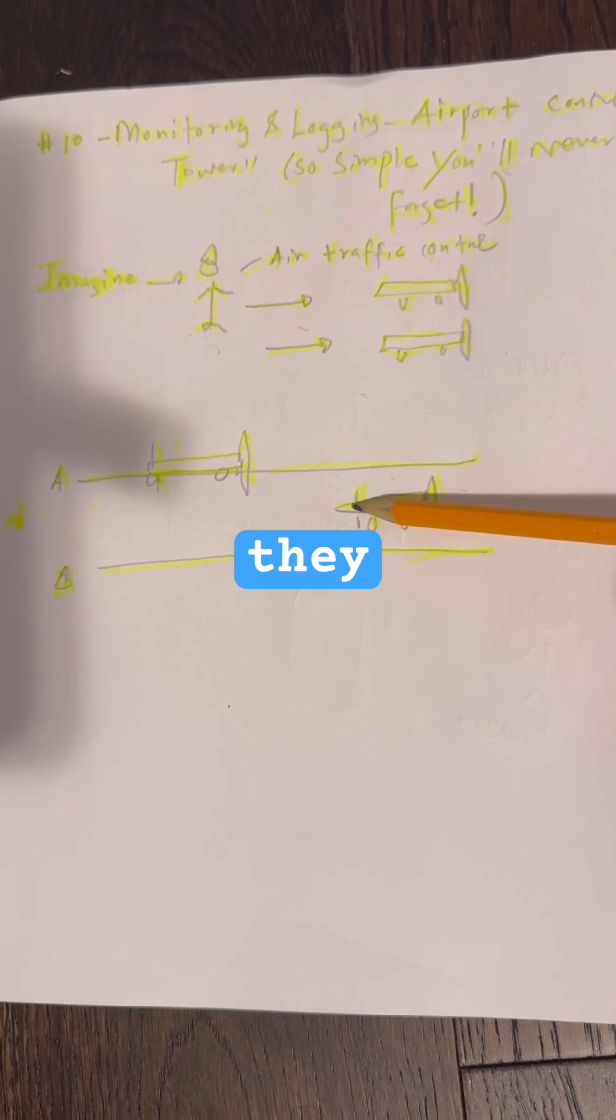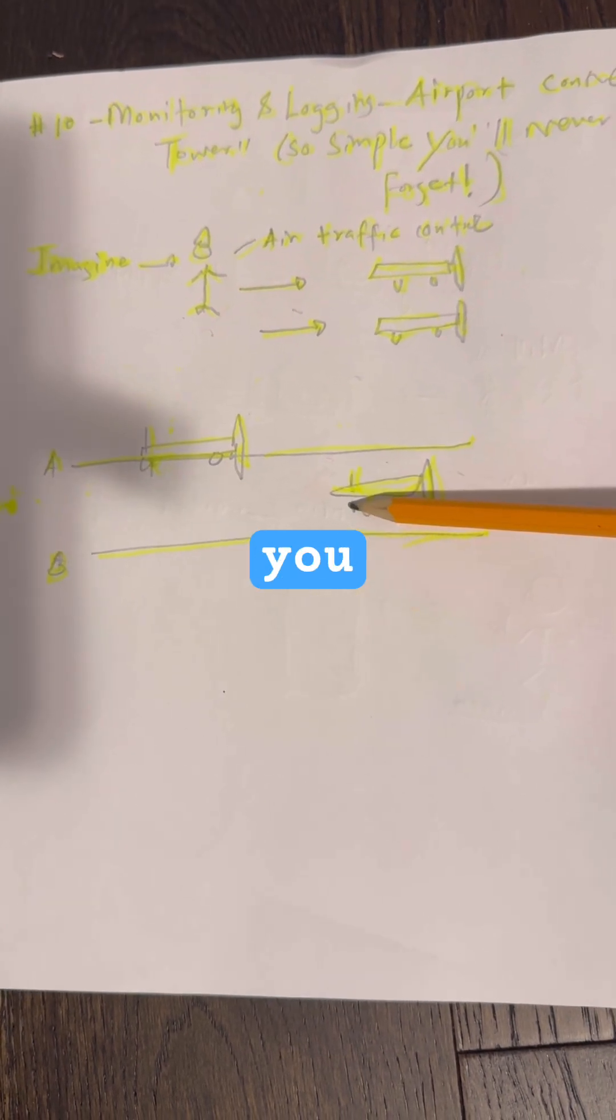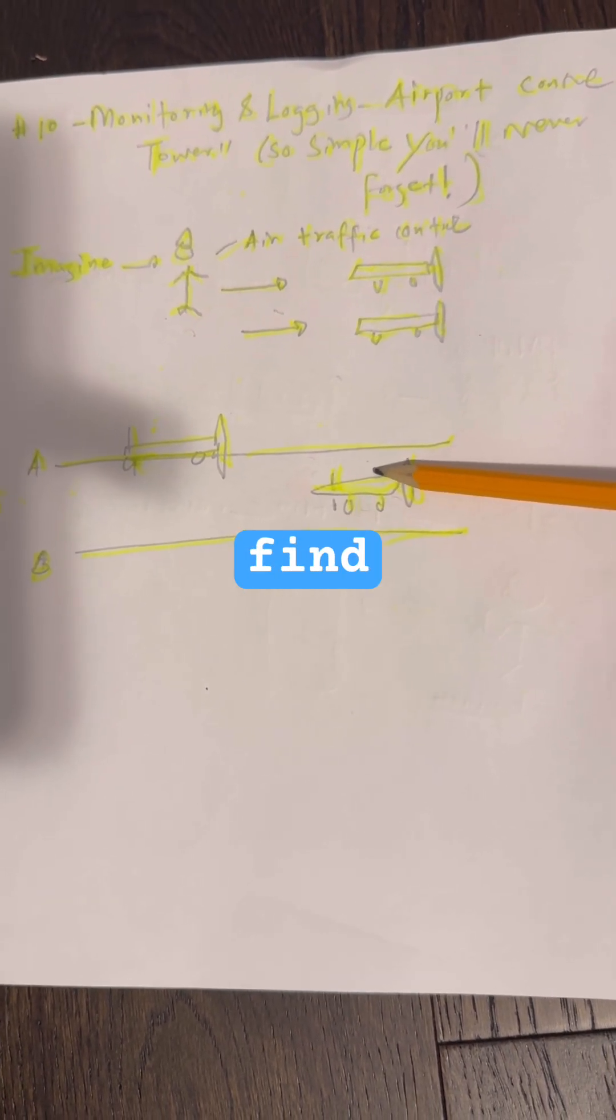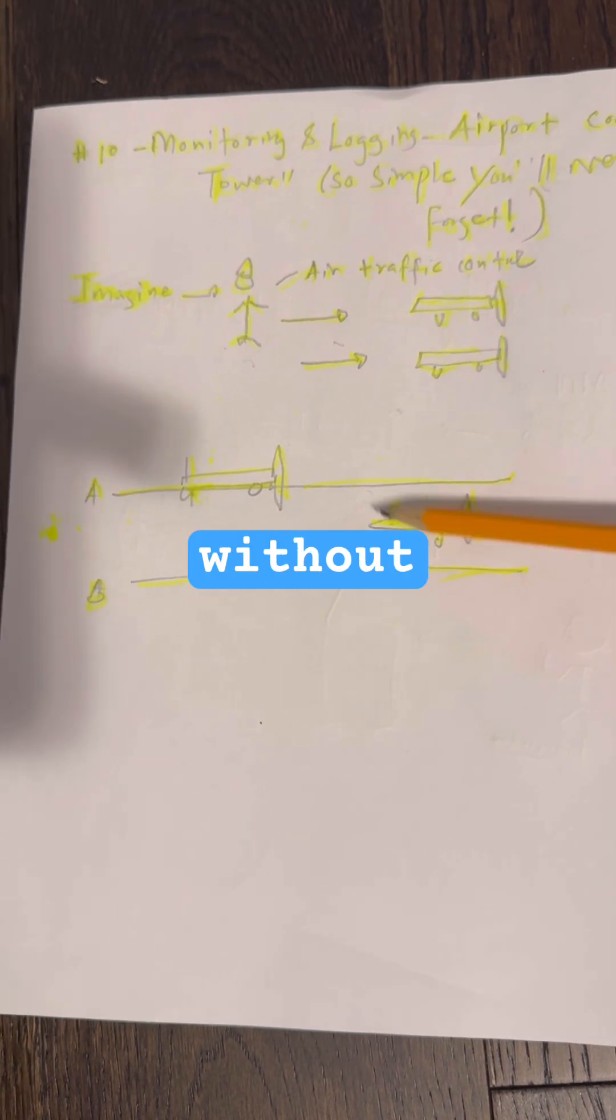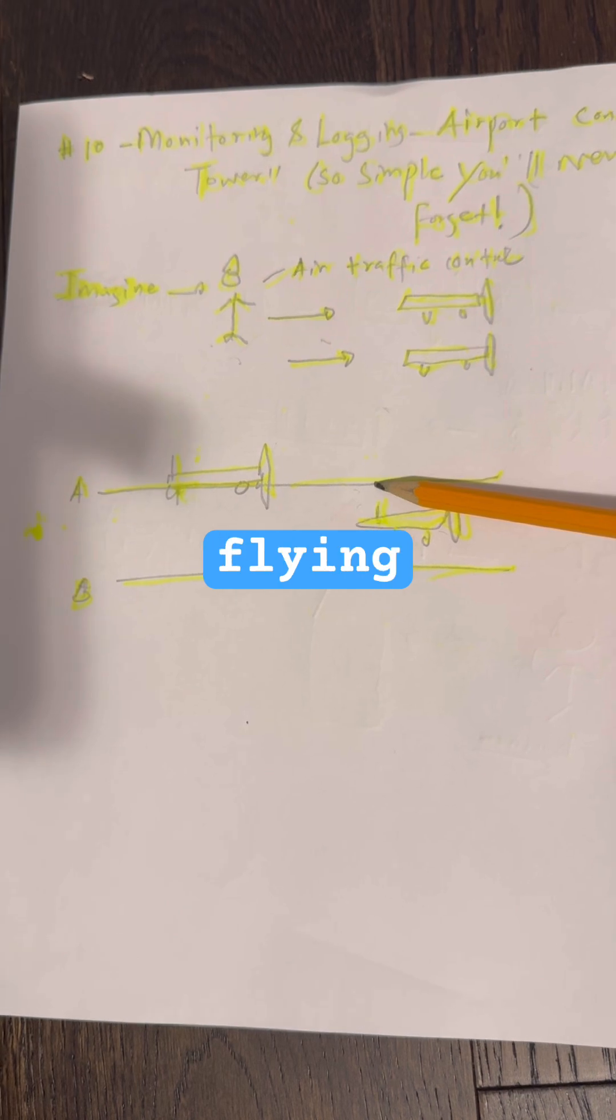And logs, they are the black boxes. If something crashes, you replay the logs to find what happened. So without monitoring and logging, microservices would be flying blind.